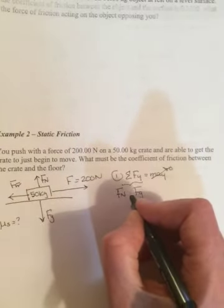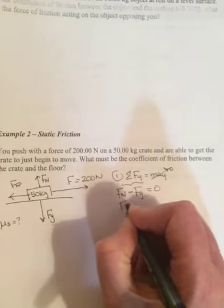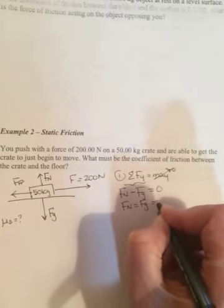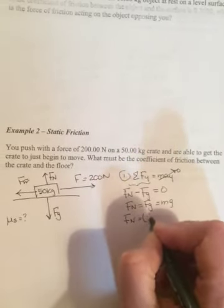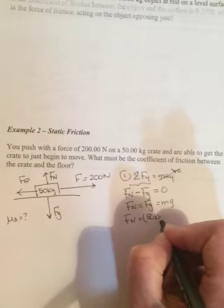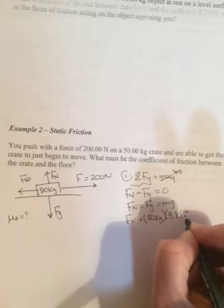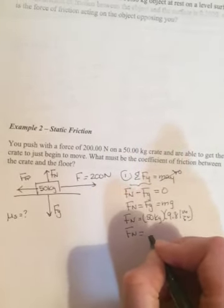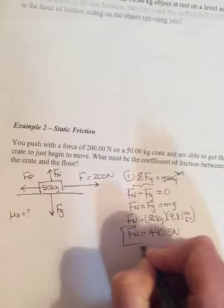Let's call up positive, so Fn will be positive, Fg will be negative, equal to zero. So Fn will equal Fg, and we know Fg is mg. So Fn will equal 50 kilograms times 9.81 meters per second squared, and so Fn will equal 490.5 newtons.